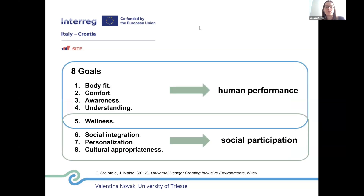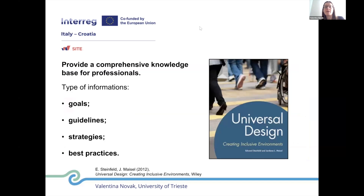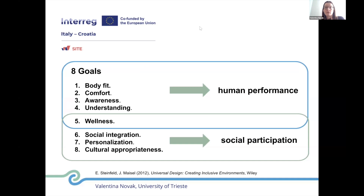I will finish my presentation with this slide. Just a few things about the goals. The reference Universal Design: Creating Inclusive Environments identifies eight main goals: body fit, comfort, awareness, understanding, wellness, social integration, personalization, and cultural appropriateness. Those goals are related to the purpose of improving human performance, health, and social participation.